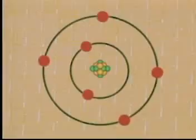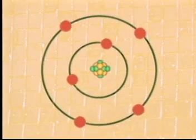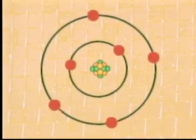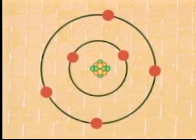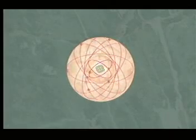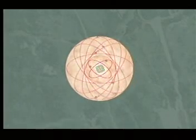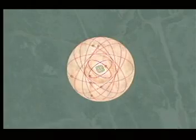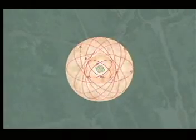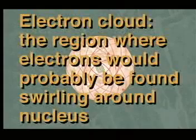While today scientists agree that electrons orbit the nucleus in energy levels, they do not do so in regular paths. Instead, electrons dart in ever-changing paths within energy levels. They form what is referred to as an electron cloud. The electron cloud represents the region where electrons are likely to be found.